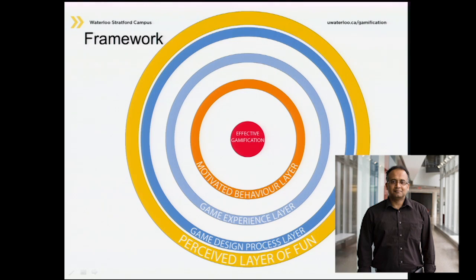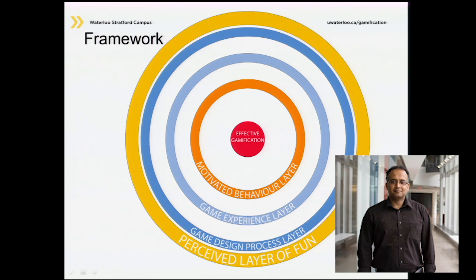This is our basic model — a simplified version of the framework. I hope you don't get mesmerized by these circles. What we see here is that at the center we have the effective gamification core, then the motivated behavior layer, the game experience layer, the game design process layer, and the perceived layer of fun. We wanted to see if we could define a formula for business applications.